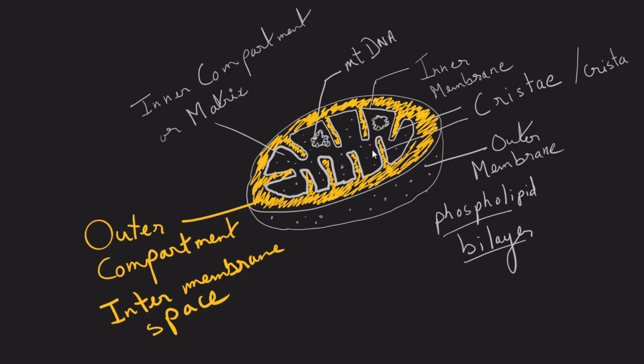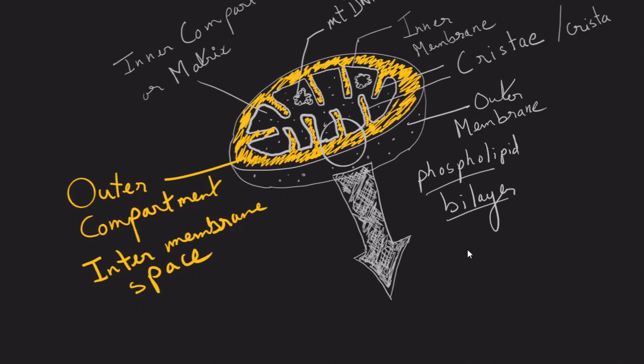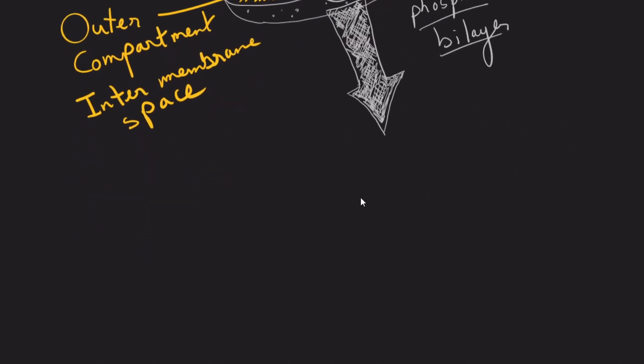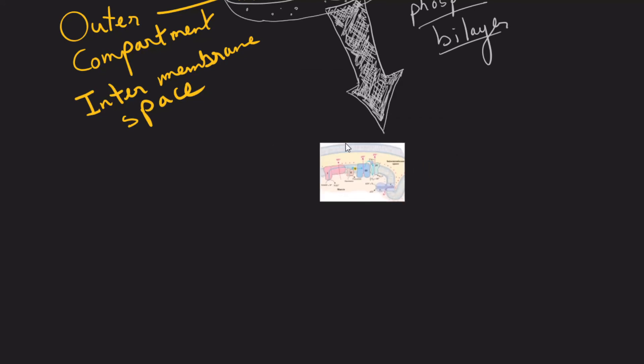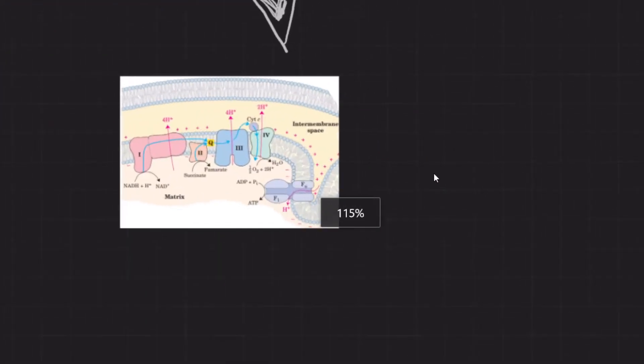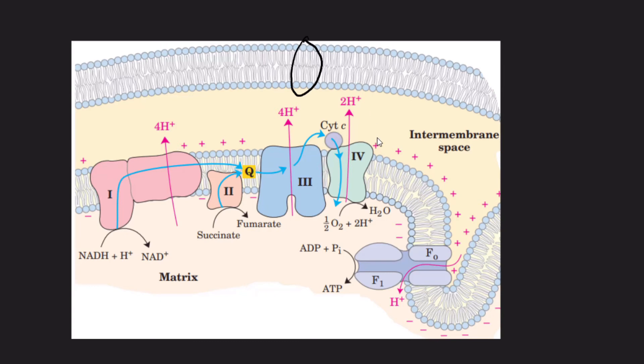When we zoom in in this particular portion of the mitochondria we can see how these two membranes look like - how the inner and outer mitochondrial membranes look like. So let's do that. I'll insert an image here that is mitochondria and I'll zoom in here. And here you can see both the outer membrane as well as the inner membrane are made up of these two layers of phospholipid molecules.